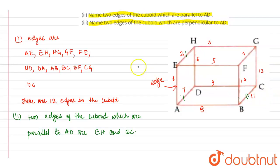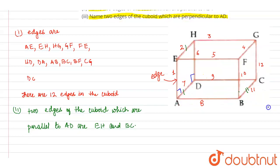Now question number 3: name two edges of the cuboid which are perpendicular to AD. We can see that AE is perpendicular and BH is also perpendicular to AD.